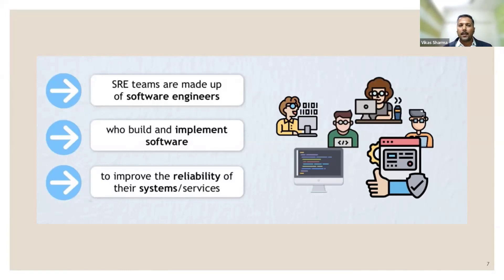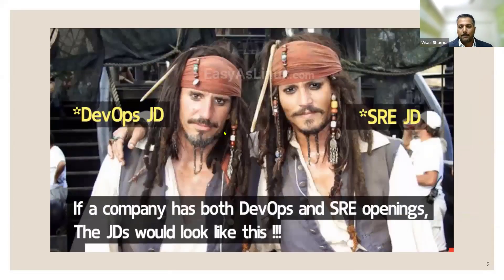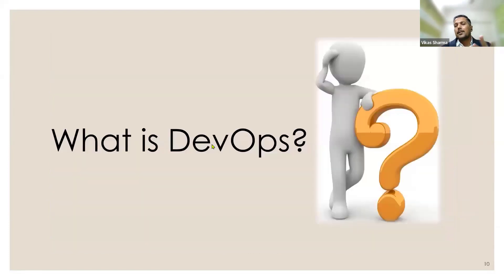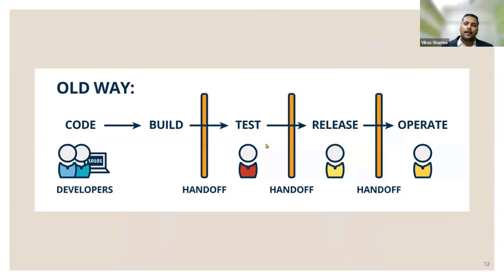Now, as I said earlier, there's a lot of confusion between SRE and DevOps. Many people are still not able to differentiate — in fact, if you look at job descriptions for DevOps and SRE they look similar; people won't be able to tell the difference. So what is that difference? For that I'll throw some light on what DevOps is. It's important to understand how things used to work before DevOps.